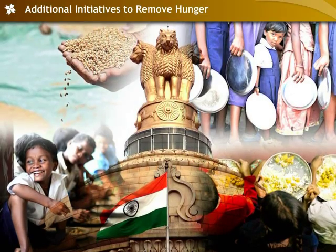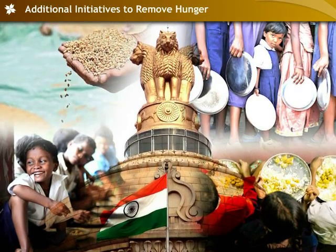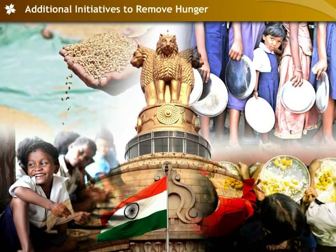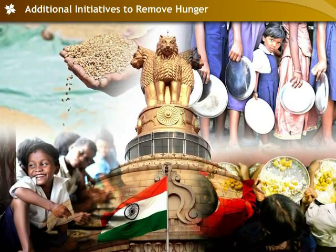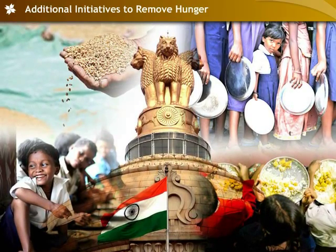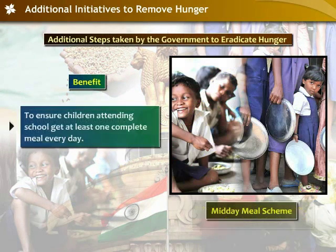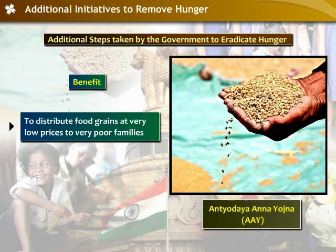The government of India has taken several other steps to eradicate hunger and malnutrition among the poor. These include the Integrated Child Development Services, the Midday Meal Scheme, and the Antyodaya Anna Yojana.